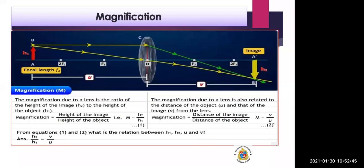V is the distance of the image from the lens and U is the distance of the object from the lens. If only the image distance and object distance are given in a problem, you can find magnification using m equals V upon U. If only the heights are given, you can use m equals H2 upon H1.